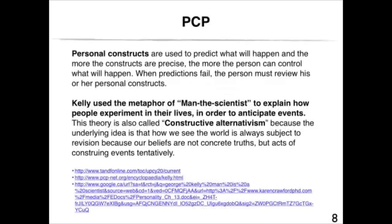Personal constructs are used to predict what will happen, and the more precise the constructs are, the more the person can control what will happen. When predictions fail, the person must review his or her personal constructs. Kelly used the metaphor of 'man the scientist' to explain how people experiment in their lives in order to anticipate events. This theory is also called constructive alternativism, because the underlying idea is that how we see the world is always subject to revision — our beliefs are not concrete truths, but act as construing events tentatively.